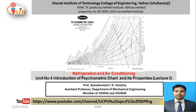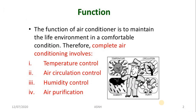In this video we will discuss the introduction of the psychrometric chart and its properties. First of all, we must know the main function of the air conditioner. The main function is to maintain the living environment in comfortable conditions. Complete air conditioning involves four important parameters: temperature control, air circulation control, humidity control, and air purification.